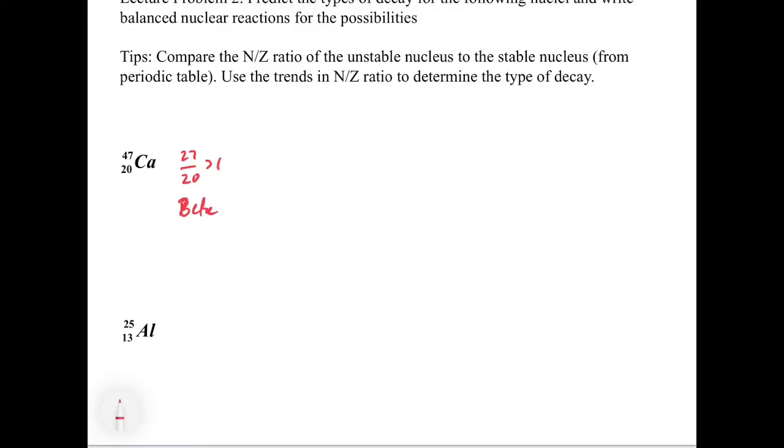Because normally our n-to-z, if we're at 20 or close to 20, we should be close to 1 to 1. In this case, we're much higher than that. We have way too many neutrons. We have 7 more neutrons than we need. So we're going to get a beta emission.